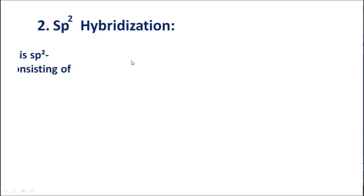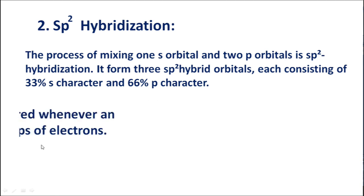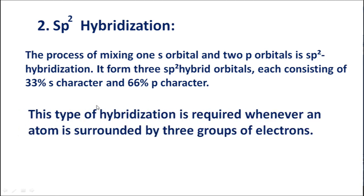The next hybridization is SP2 hybridization. The process of mixing one S orbital and two P orbitals is SP2 hybridization. It forms three SP2 hybrid orbitals, each consisting of 33% S character and 66% P character. This type of hybridization is required whenever an atom is surrounded by three groups of electrons.